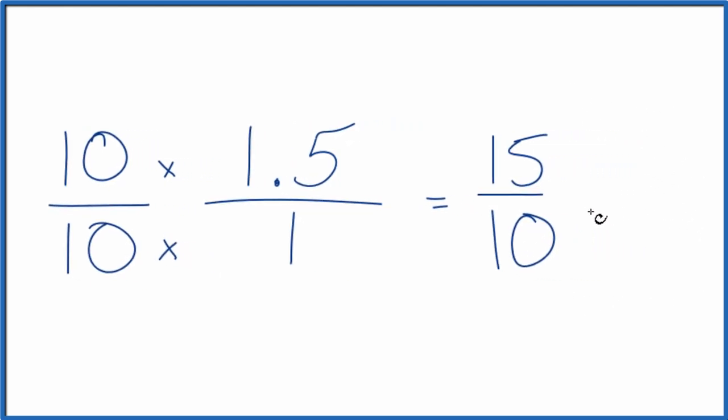We could simplify this further, though. So 5 goes into 15 and 10. So 3 times 5 is 15. 2 times 5 is 10. So our greatest common factor is 5.